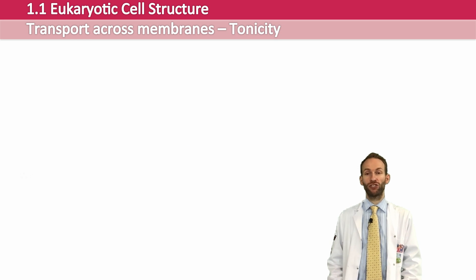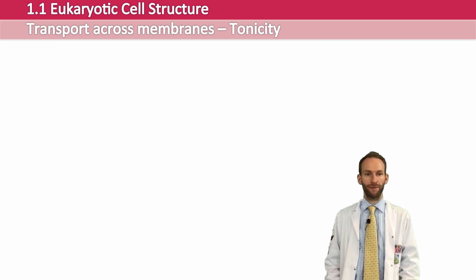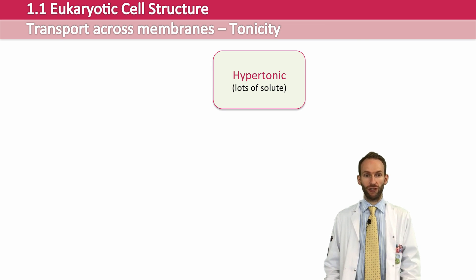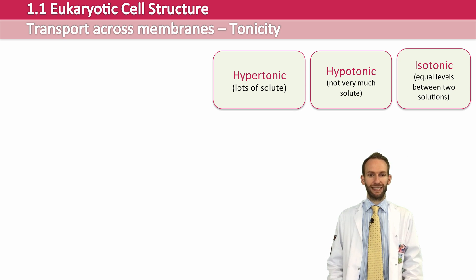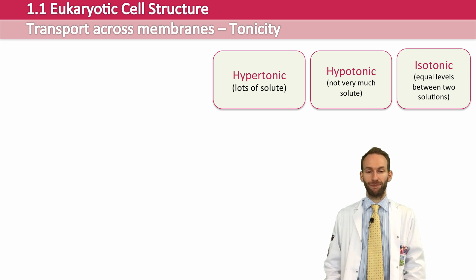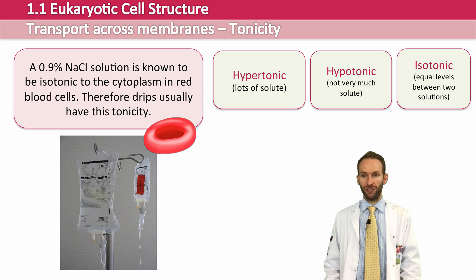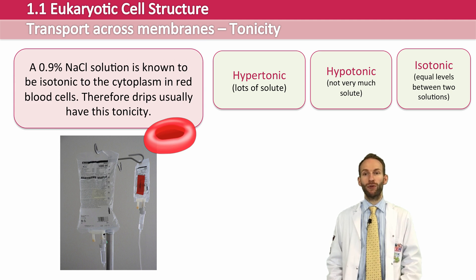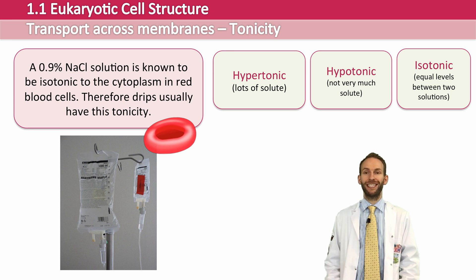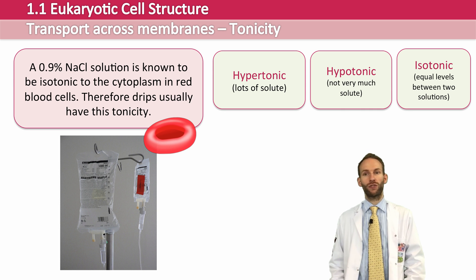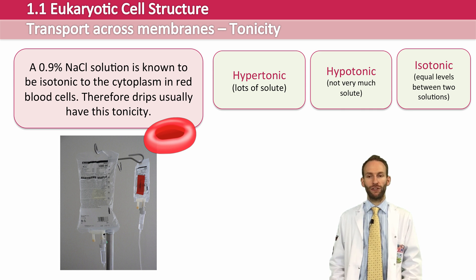Tonicity is a measure of how much solute is dissolved in a substance. If the solution is hypertonic then it has lots of solute dissolved in it. If it's hypotonic then it has very little of the solute dissolved in it. If it's isotonic then it has the same concentration on both sides of the membrane. A 0.9% sodium chloride solution is known to be isotonic to the cytoplasm of red blood cells. So when you get put on a saline drip in hospital, it's saline so that it is isotonic to your cells, meaning your cells do not swell up or shrink because of osmosis.